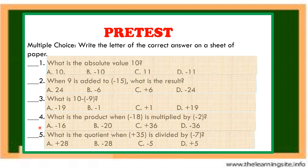Number 5. What is the quotient when positive 35 is divided by negative 7? Letter A, 28. Letter B, negative 28. Letter C, negative 5. Letter D, positive 5.